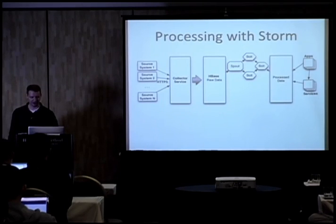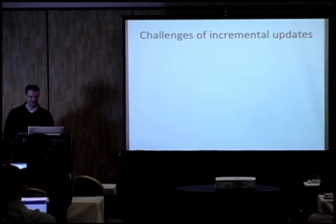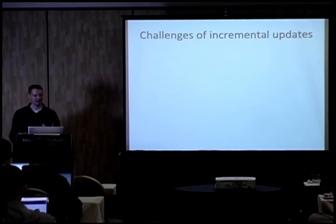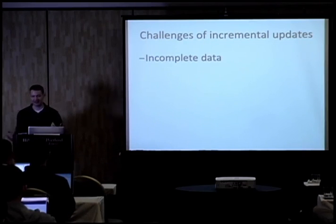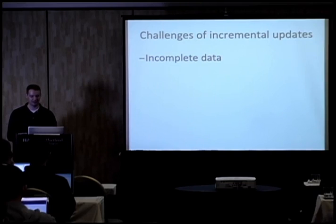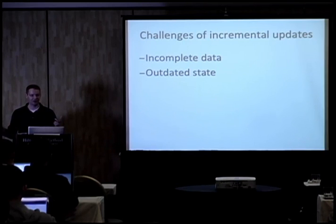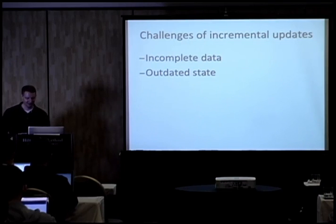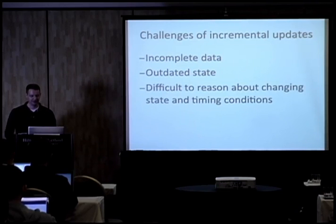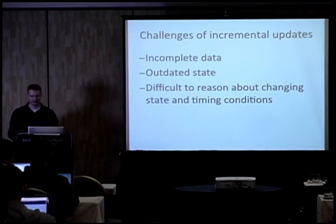This works fairly well, but there are a number of challenges intrinsic to doing incremental updates and processing. One is dealing with incomplete data — you're getting data one piece at a time and may not have the whole picture. Another is outdated state: if I change my name from Smith to Jones and I'm building a phone book, I have to remove the Smith entry, whereas in a MapReduce job I just throw out the phone book and rebuild the whole thing. This creates complicated edge cases and timing and state conditions that can be difficult to reason about.